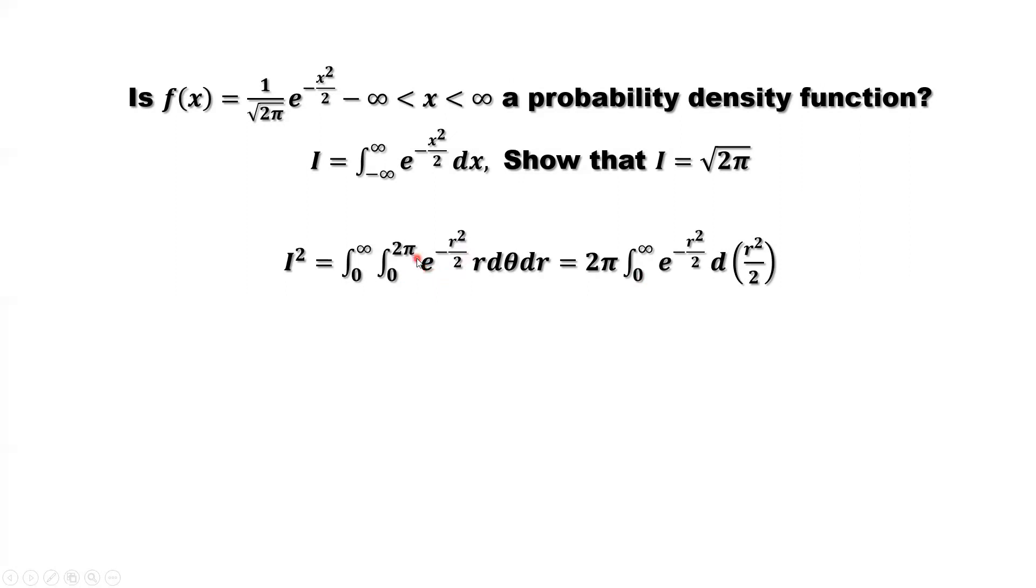Look at the inside part dθ. Inside part has nothing to do with θ. So just 2π. From zero to 2π. That's a constant.